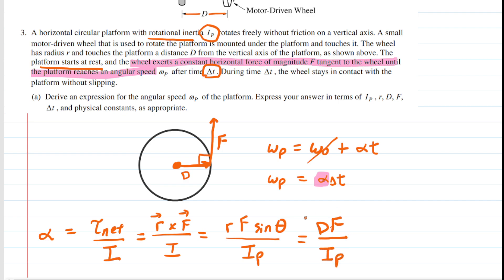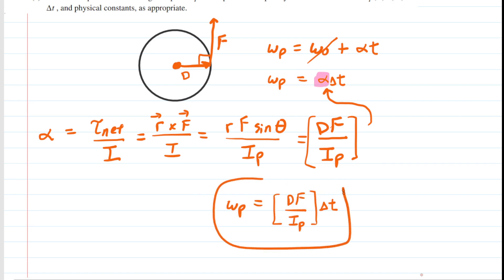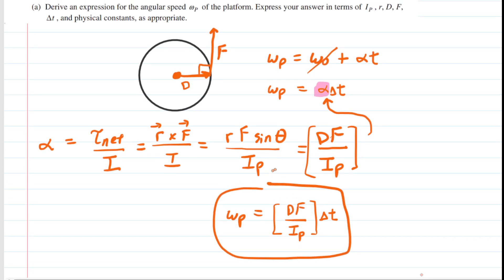So our angular acceleration is DF divided by I_P. We plug that in for alpha to get our expression for the final angular speed. This is the correct answer to Part A — expressed in terms of I_P, D, F, and delta T. That is the form the College Board is looking for.